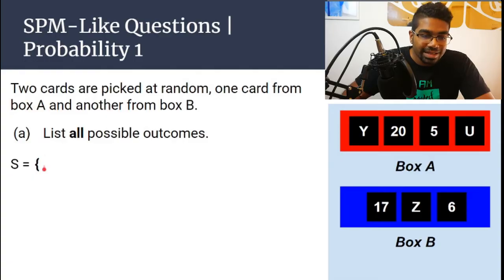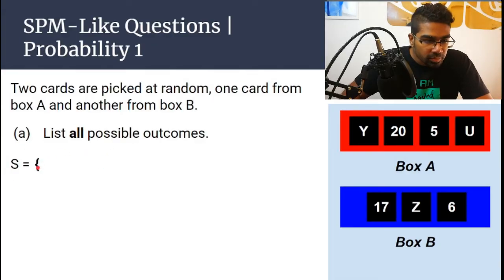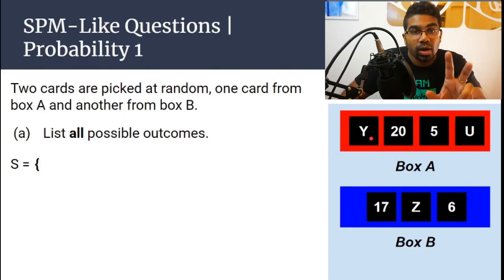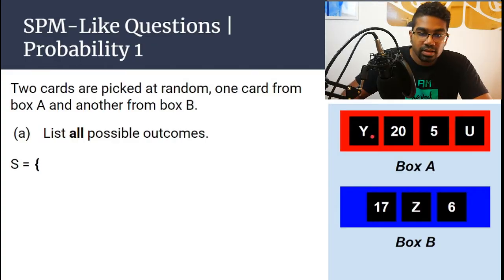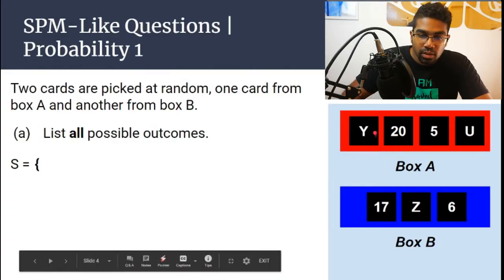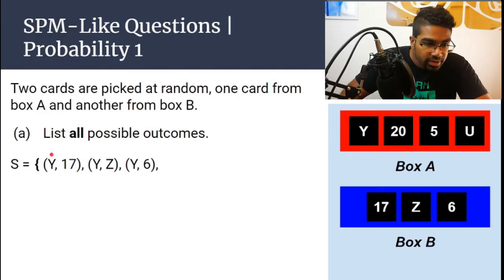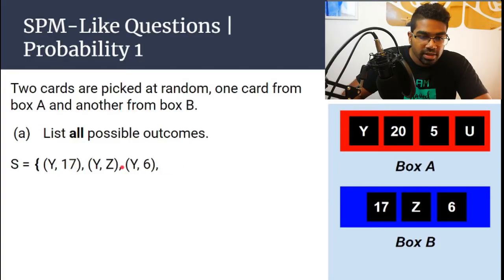When listing outcomes, you have to keep in mind that we need to use set notation. S represents sample space, and when we write set notation, we use curly brackets. We have to do this systematically so you don't miss out anything. Let's look at box A first — say the first card picked is Y. So the first combinations can be Y17, YZ, and Y6.